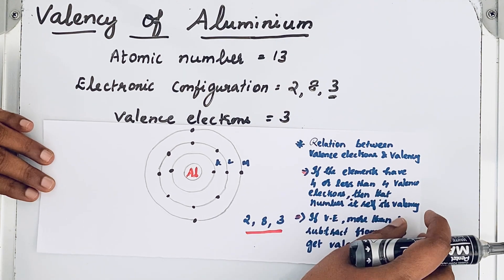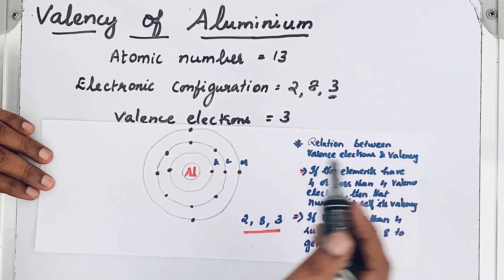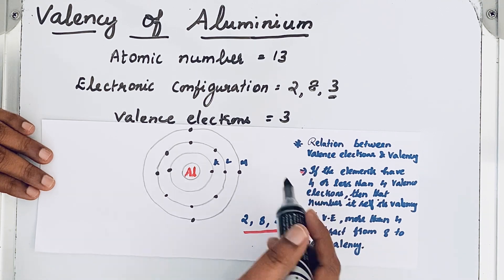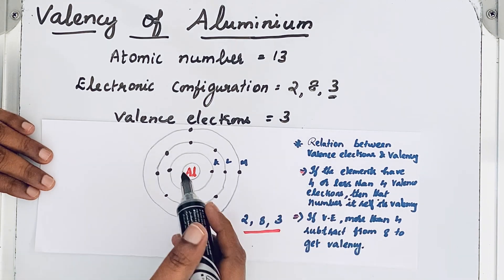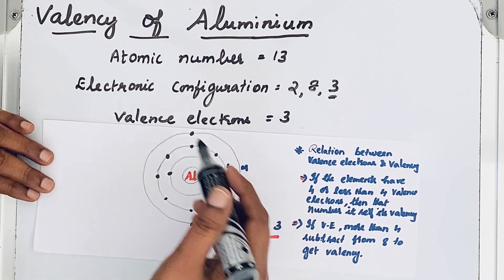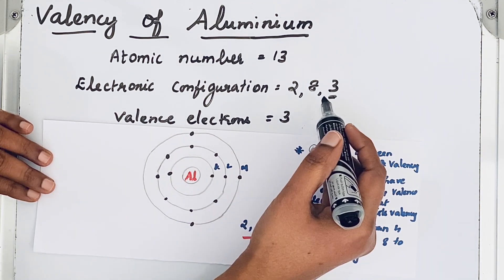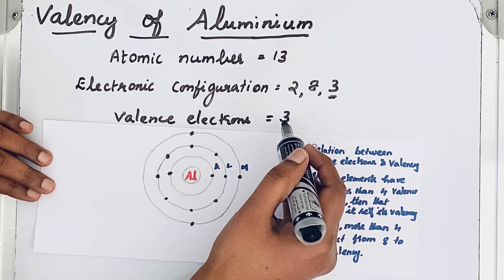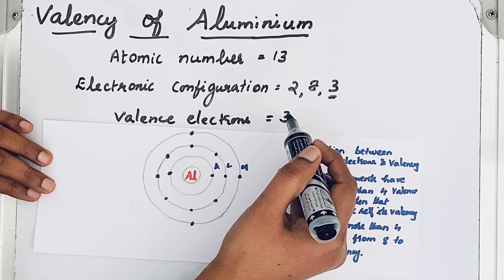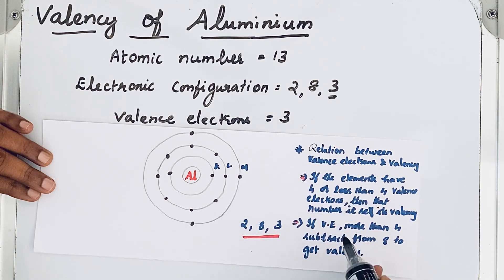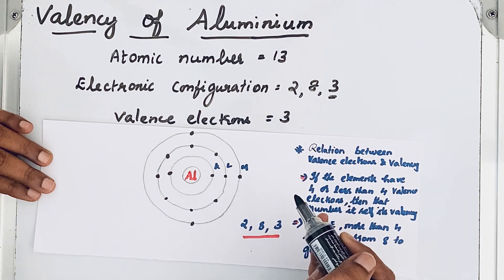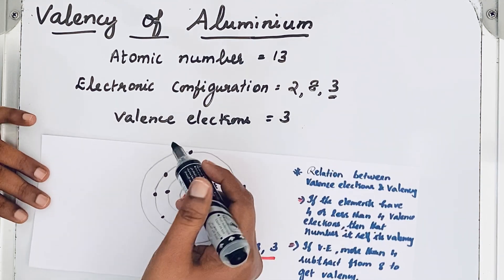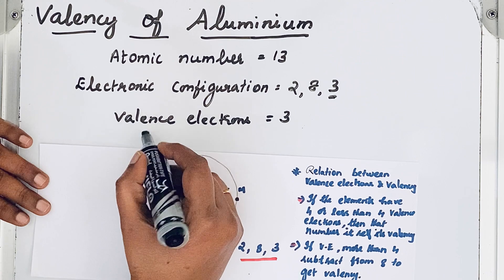There is also a relation between valence electrons and valency. If the valence electrons are four or less than four, then the valence electron itself is the valency. In aluminium, the valence electron is only three, which is less than four, so the valence electron itself is the valency. If it is more than four, then we need to subtract from eight.